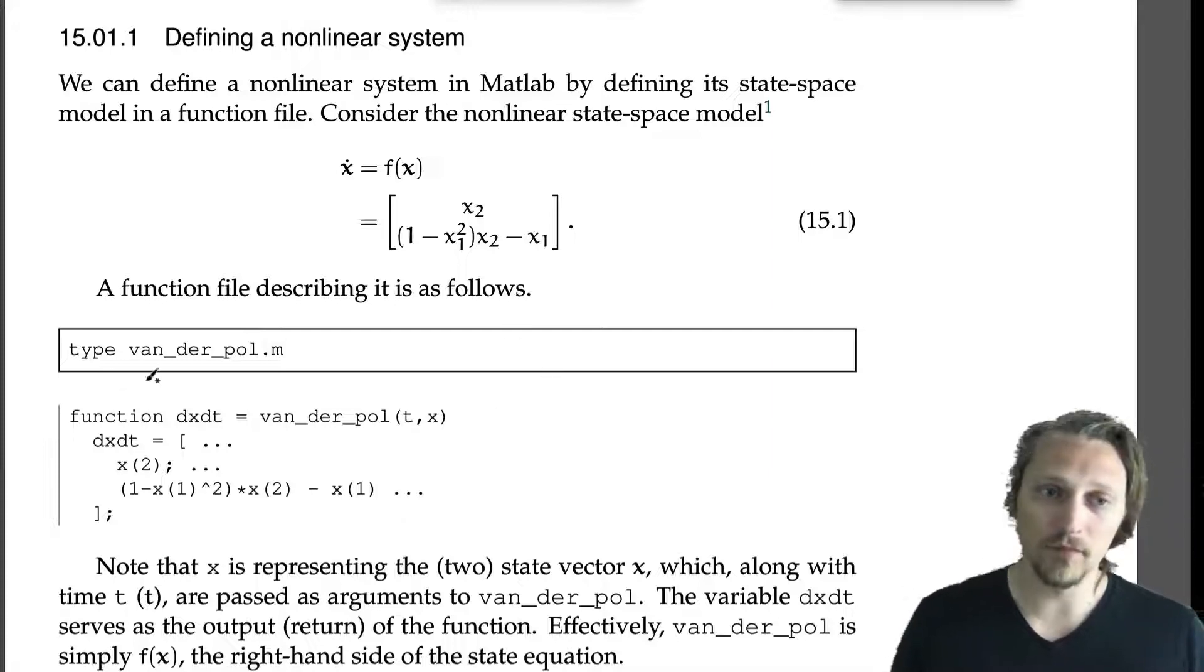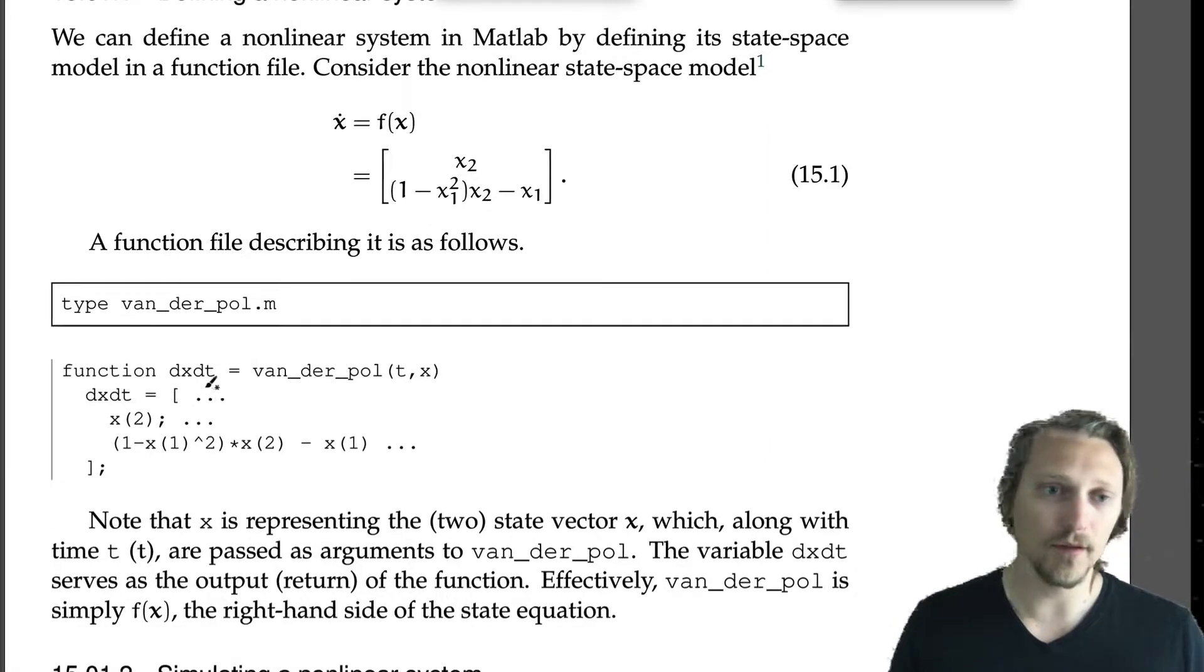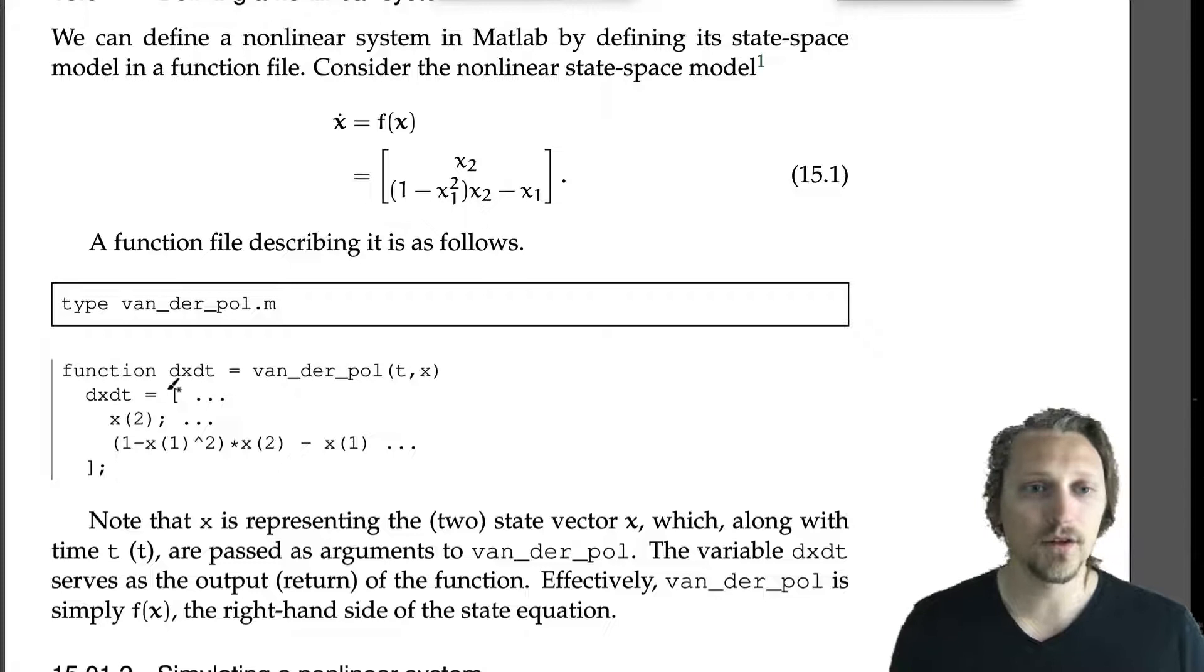A function file describing it is as follows. I'll just print out the contents of the van_der_pol.m file that I created, which includes this snippet here. This is the entire file, actually: function dxdt = van_der_pol(t, x). It has to be a function of time and the state variable vector x.